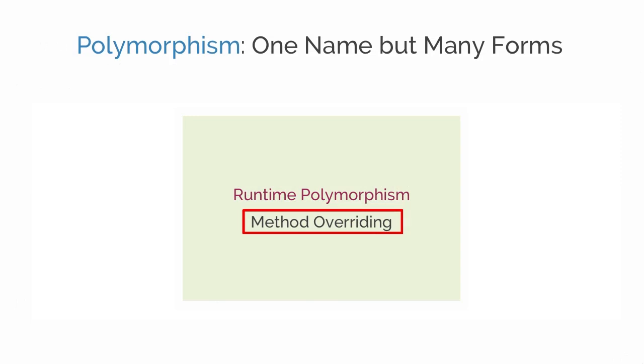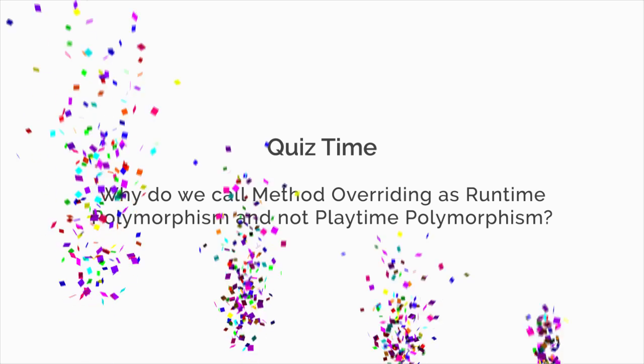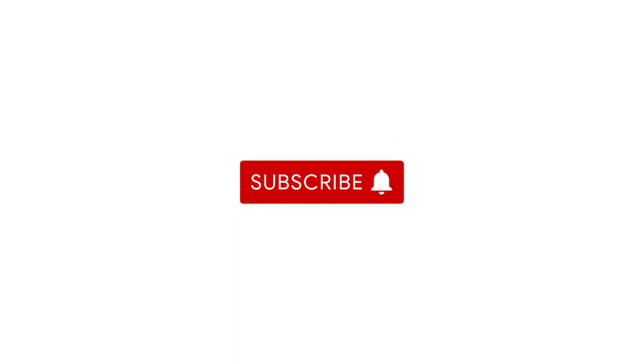This was all about runtime polymorphism. Here is a quiz question: why do we call method overriding runtime polymorphism and not compile time polymorphism? Answer in the comments below — one lucky winner will receive an exciting Internshala Trainings merchandise. This video is part of the Internshala Trainings Core Java program. Visit the link in the description to learn more about Java and object-oriented programming, and subscribe to the channel for more content.